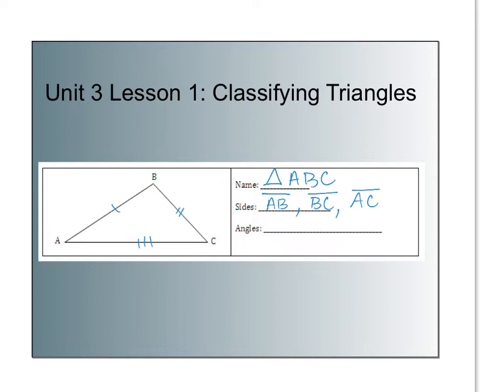To name the angles, you're going to use the angle symbol, and there are three angles. Rather than using three letters, in this case if I just say angle A, it's very clear which angle I'm talking about. I could call that angle BAC, but I don't need to. So we have angle A, angle B, and angle C.